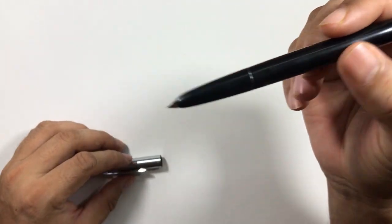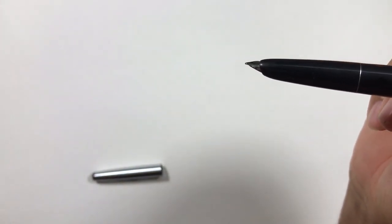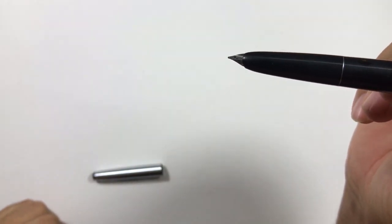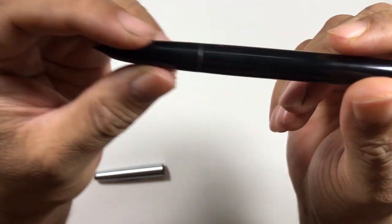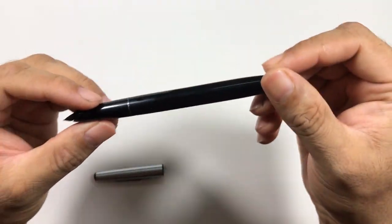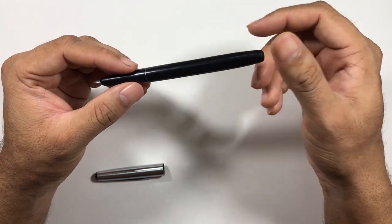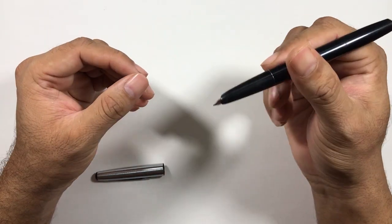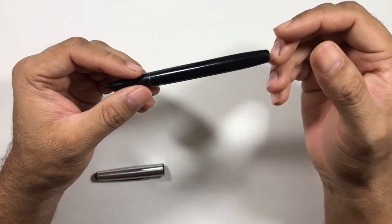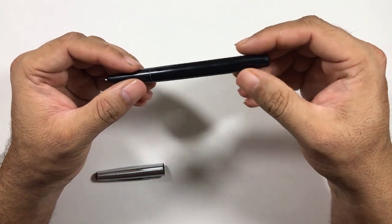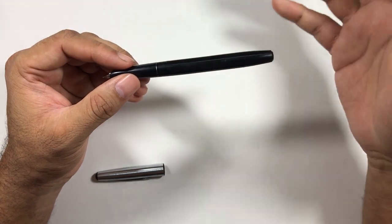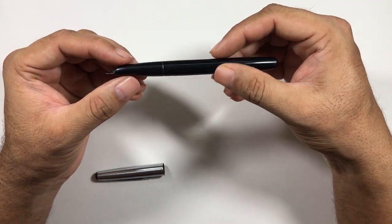This pen has a semi-hooded nib and it has an ebonite feed. It's a piston filler so it takes more ink than the cartridges and the converters. It's a thin pen, not very fat, so it takes more ink than regular cartridges and converters but not that much larger ink capacity.